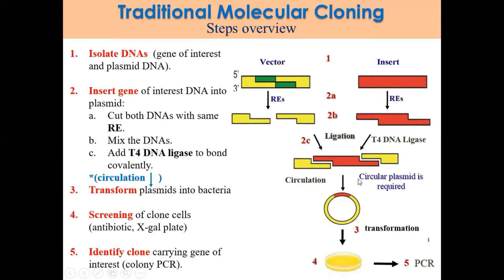The circular plasmid is very important because only a circular plasmid can be transformed into bacteria. We can use blue-white screening with antibiotic and IPTG/X-gal plates. After that, we can identify the clone using PCR product.